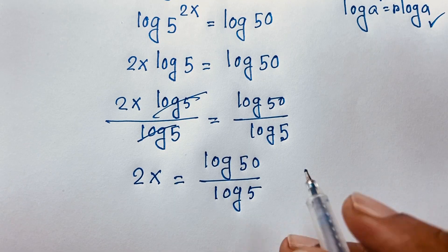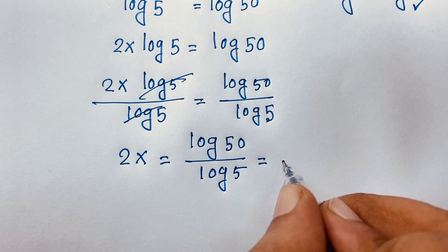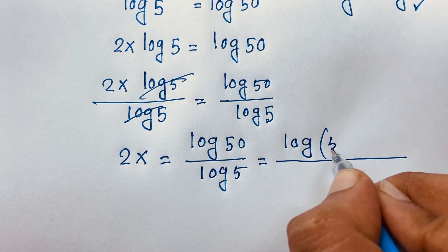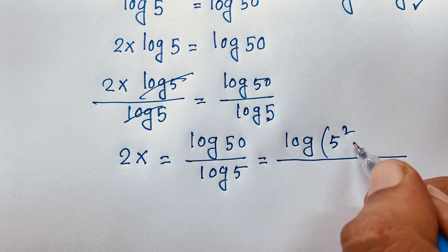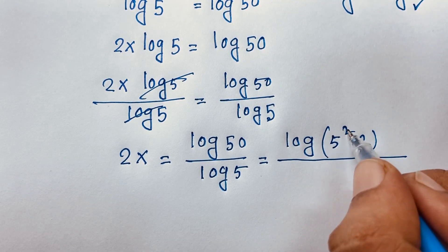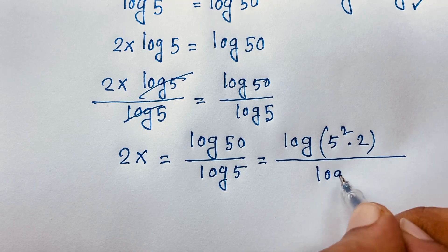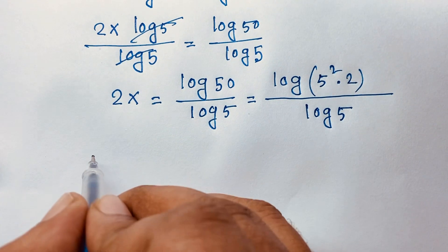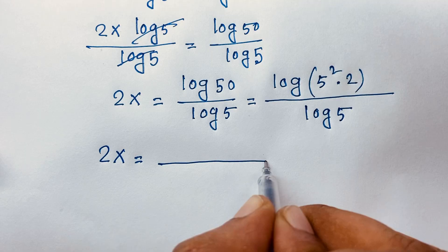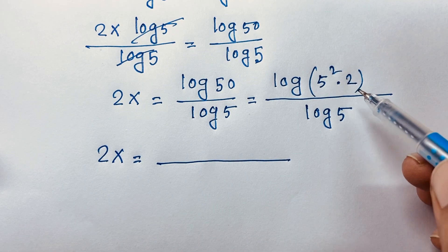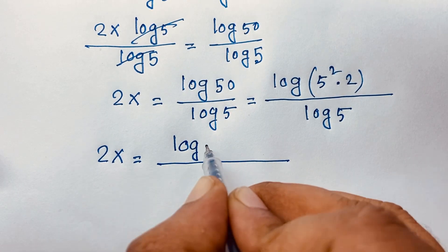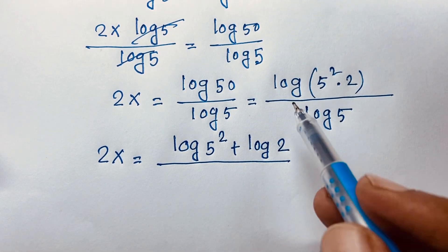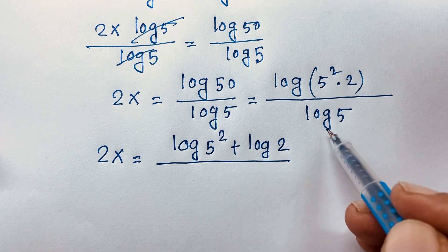Now if I evaluate this expression, I can see that log 50 equals log of 5 squared times 2 — since 25 times 2 is 50 — all over log 5. Using the rule log(ab) = log a + log b, this expression becomes log(5²) plus log 2, all over log 5.